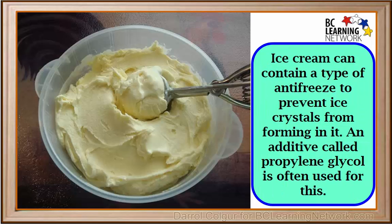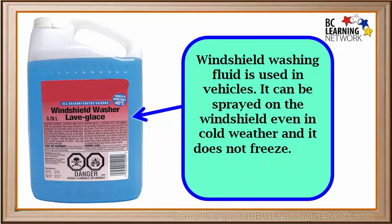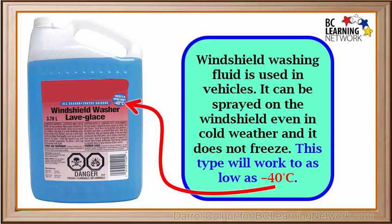Ice cream can contain a type of antifreeze to prevent ice crystals from forming in it. An additive called propylene glycol is often used for this — read the label on ice cream and see if you can find this substance in the list of ingredients. Windshield washing fluid is used in vehicles and can be sprayed on the windshield even in cold weather without freezing. It contains a type of solute which lowers its freezing point, and can work to temperatures as low as minus 40 degrees Celsius.